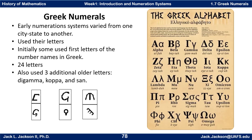But eventually, the following system kind of became standard in the Greek culture. They did use their alphabet. Like the 26 letters of our current Latin Roman alphabet, they have an alphabetical order and both lower and uppercase versions. Here is a table showing both the upper and lowercase versions in alphabetical order.